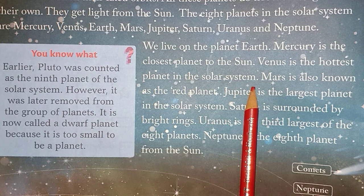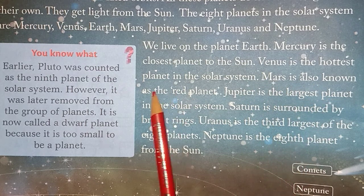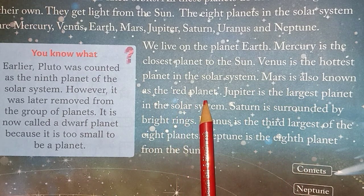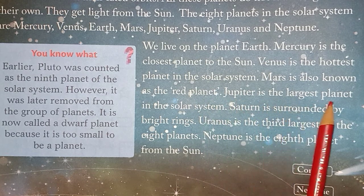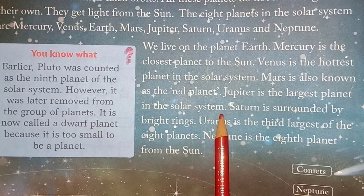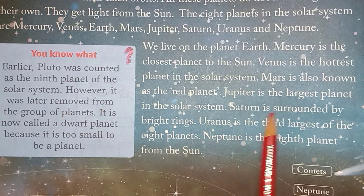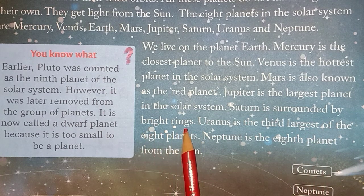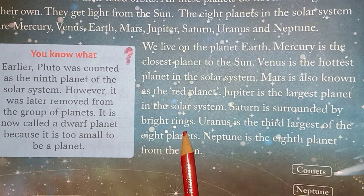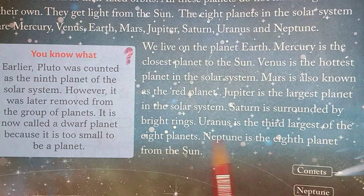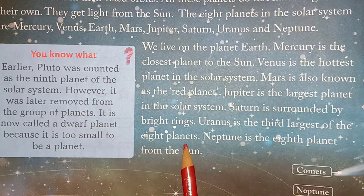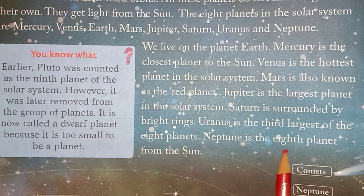Mars is also known as the red planet because of its red color. Jupiter is the largest planet in the solar system. Saturn is surrounded by beautiful bright rings. Uranus is the third largest of the eight planets. Neptune is the eighth planet from the Sun.